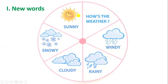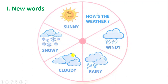Listen and repeat one more time. Sunny. Snowy. Cloudy. Rainy. Windy. Đây là các dạng thời tiết điển hình mà chúng ta hay gặp.